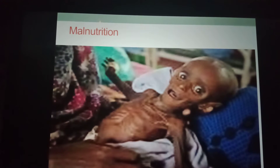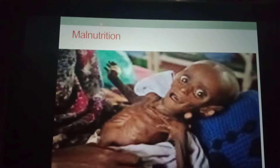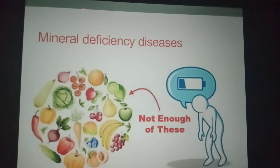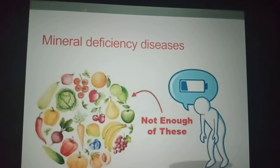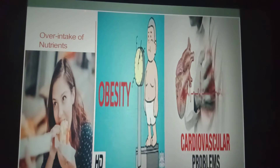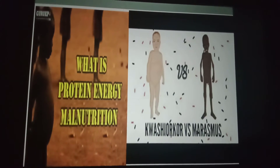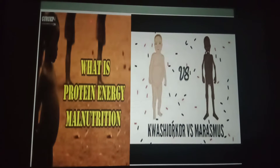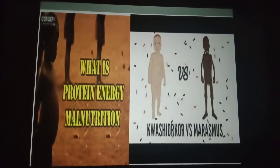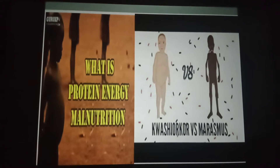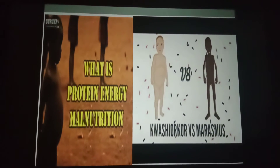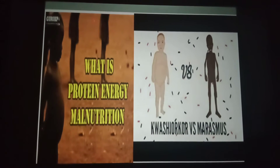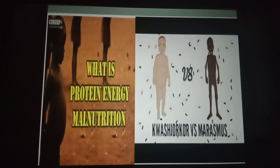Common forms of malnutrition include: protein energy malnutrition, mineral deficiency diseases, and over intake of nutrients. Protein energy malnutrition means inadequate availability or absorption of energy and proteins in the body. It is the leading cause of death in children in developing countries, and it may lead to diseases such as kwashiorkor and marasmus.